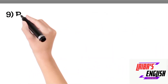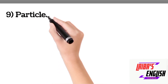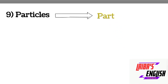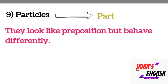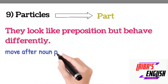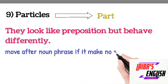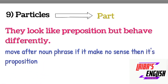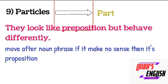The ninth lexical category is particles, which will be denoted by PART. There is an important concept related to verbs: particles basically look like a preposition but they behave differently. Whenever you see them, they look like a preposition but they are actually not — they are particles. The key concept is: if it moves after a noun phrase and still makes sense, it is a particle; but if it moves after the noun phrase and does not make sense, it is a preposition.